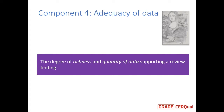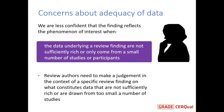The final component is adequacy of data, which as Claire mentioned focuses on the degree of richness and quantity of data supporting a review finding. We're less confident that a finding reflects the phenomenon of interest when the data underlying the finding are not sufficiently rich or come from only a small number of studies or participants. Review authors need to make a judgment on what constitutes data that are not sufficiently rich. For example, if you have a more interpretive finding — making a hypothesis about how something works or how people feel — you may require richer data or data from a larger number of studies. On the other hand, for a simple descriptive finding, you may have a lower threshold regarding the number of studies and richness of data.